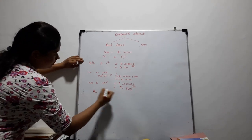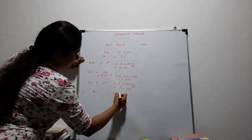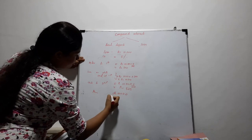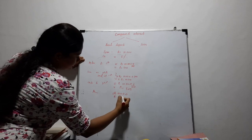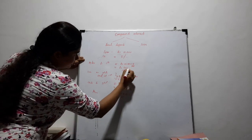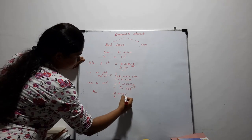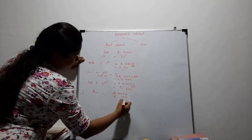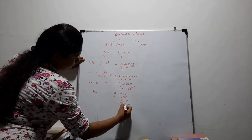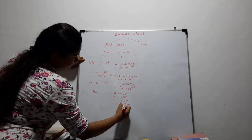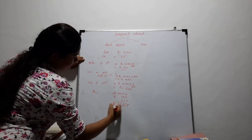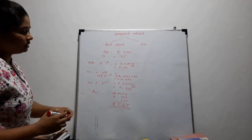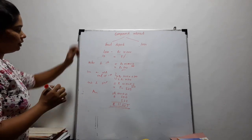The loan amount needed to repay — considering the loan amount at the end of the first year — to settle the loan, we have to pay 11,025 rupees.